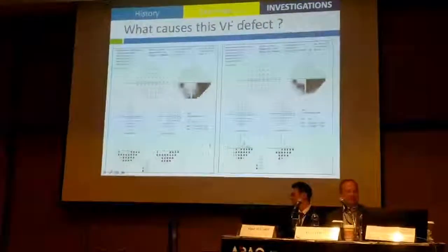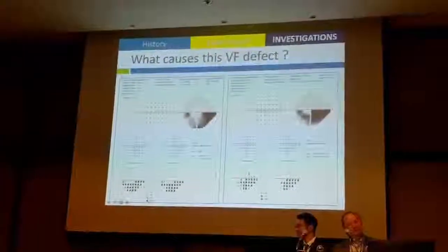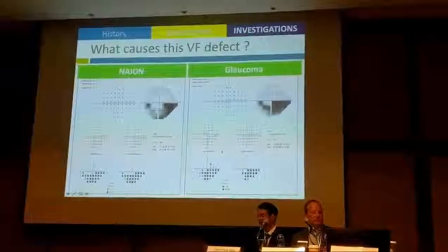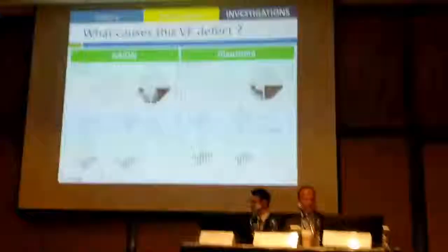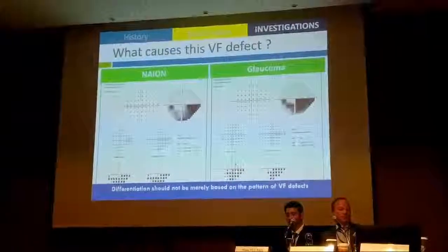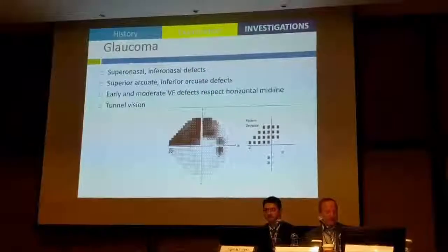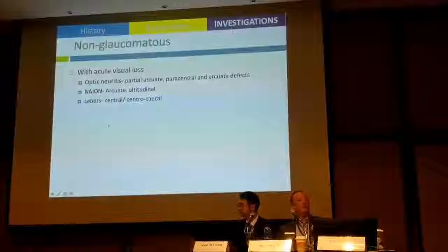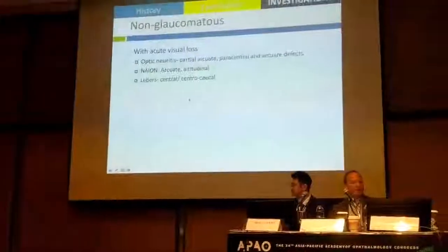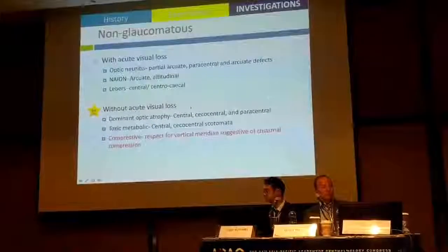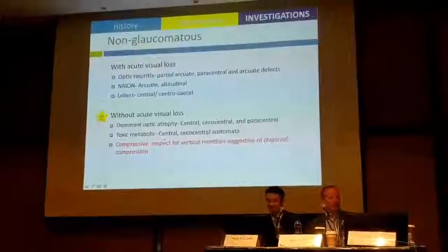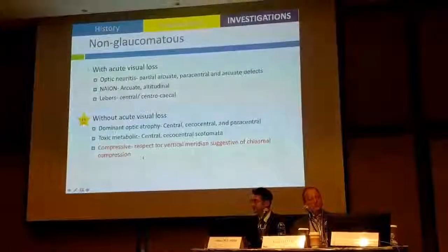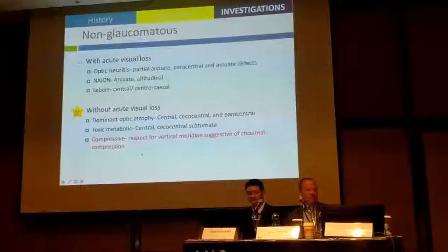In addition to history and disc appearance, we need visual fields — but looking at two visual fields, one from NAION and one from glaucoma, they can look exactly the same, so visual field examination alone cannot give you the whole picture. In glaucoma, you get superonasal and inferonasal defects, arcuate defects, and at end stage, tunnel vision. In conditions without acute visual loss, such as dominant optic atrophy and toxic metabolic causes, you get a central or caecocentral scotoma, which is quite different. Most importantly, if you get a visual field defect respecting the vertical meridian, you must think about chiasmal compression.